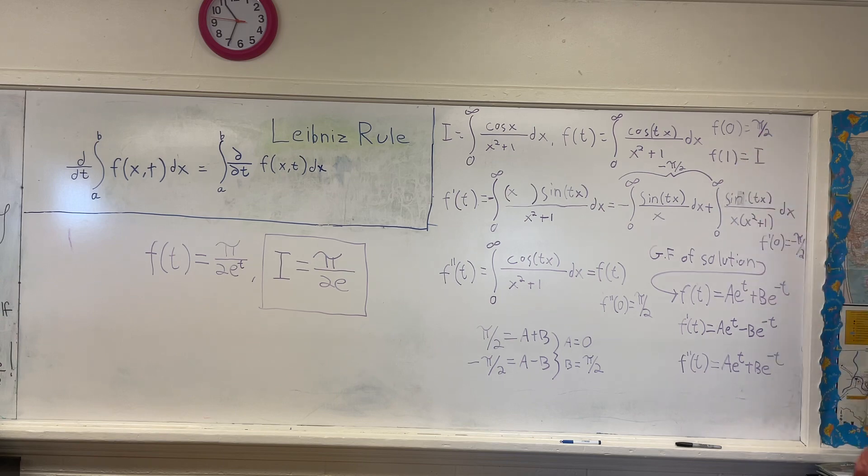1 over x squared plus 1 integrated from 0 to infinity with respect to x is pi over 2. And of course, if you plug in 1 for t, you get our original integral right there.